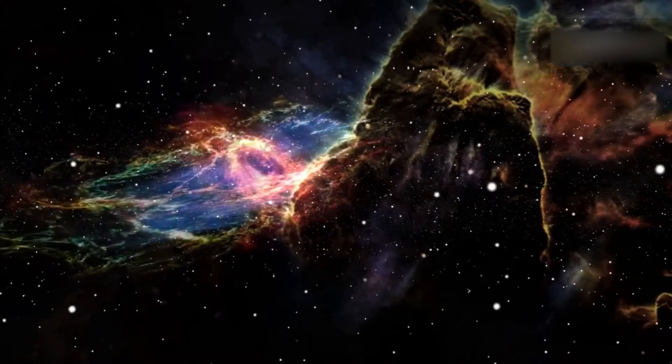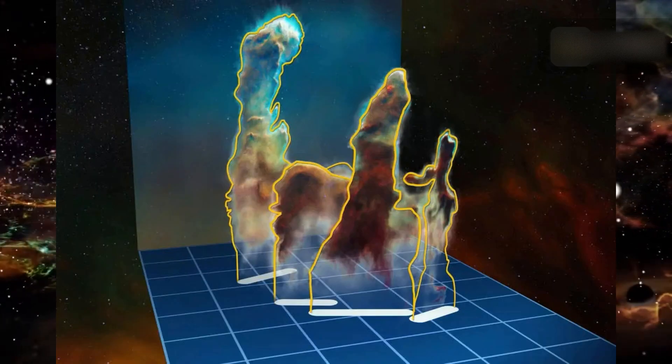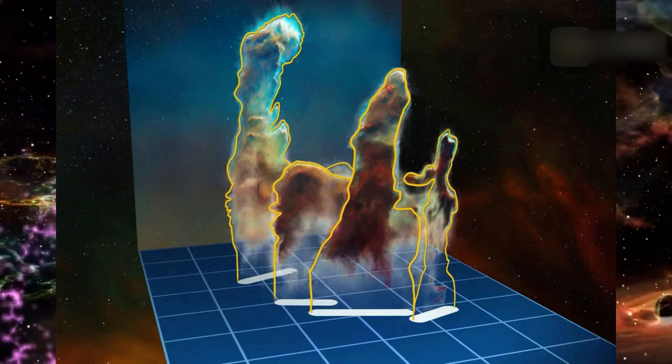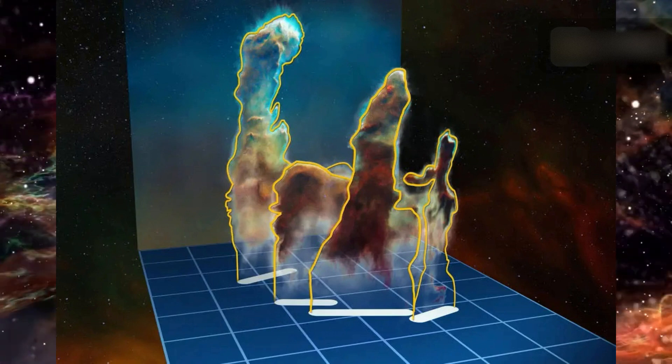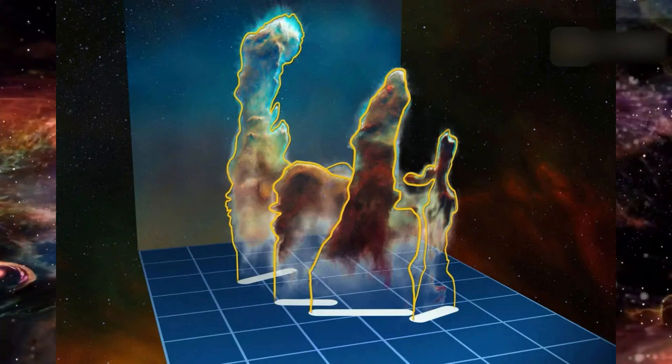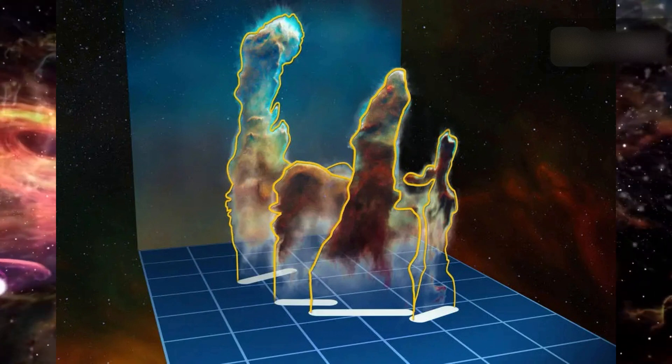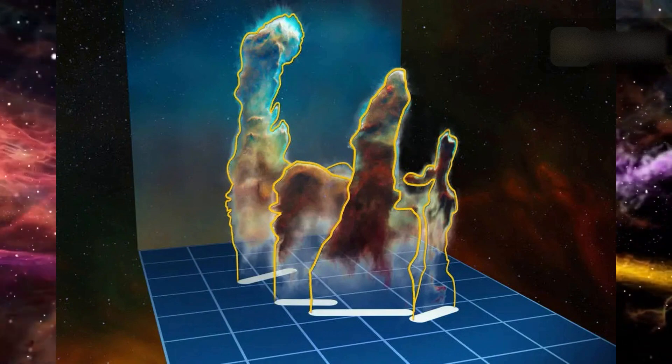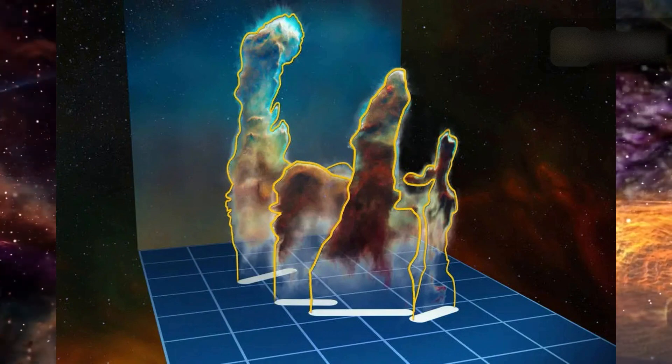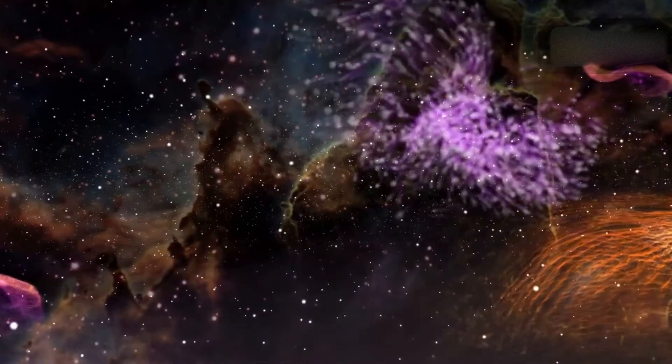Additionally, a bonus product of this visualization is a new 3D printable model of the Pillars of Creation. The base models of the four pillars used in the visualization have been adapted into an STL file format. This allows viewers to download the model files and print them on a 3D printer.